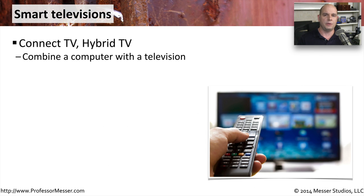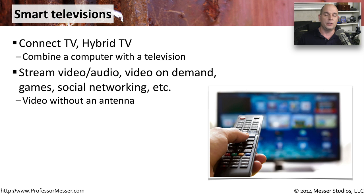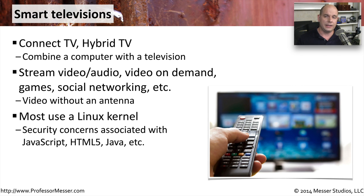Our new generation of televisions provides us with a number of different capabilities. You may see these smart televisions referred to as Kinect TVs or hybrid TVs, because they're more than just a television — they provide streaming capabilities for audio and video, video on demand, games, and other applications right on your television. You simply plug in an ethernet connection or connect to your wireless network and all of these capabilities become available. Under the surface, these televisions are running a Linux kernel, so as a security professional we have to be concerned about applications running on top of that Linux kernel, like Java, JavaScript, or HTML5. We have to keep in mind that the applications themselves are susceptible to tampering and malicious activity.